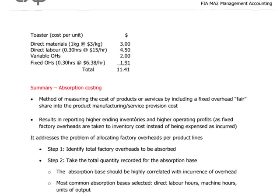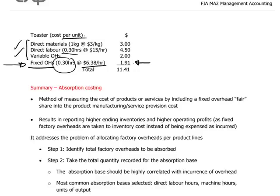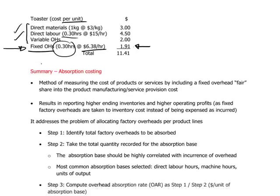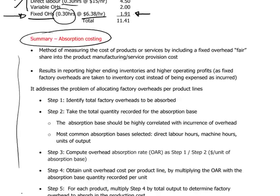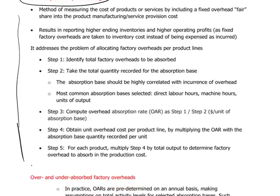Similarly, the toaster cost card will also have direct materials, direct labor, and variable overheads, and then the fixed overhead portion — also an application of $6.38, multiplied by the standard time it takes to produce one toaster, which is 0.3 hours. In this way, we now have a dollar amount per unit of product representing the fixed overheads to be absorbed. In summary, these steps describe how to arrive at a fully absorbed production cost on a per unit basis, linking overhead costs to the product itself.